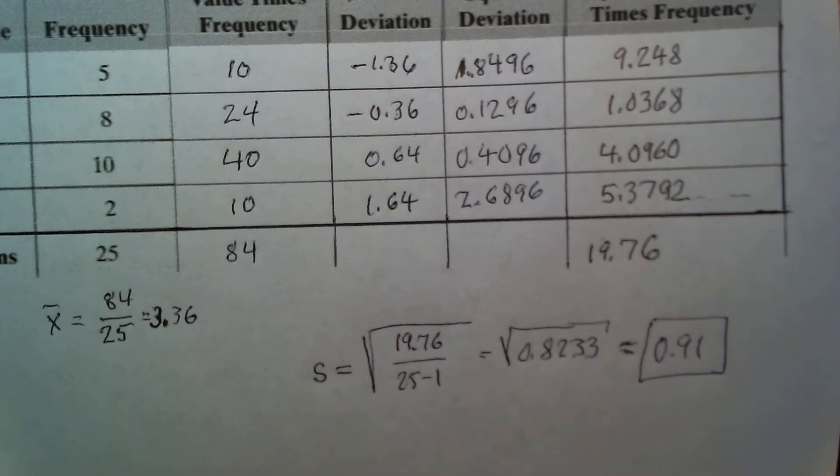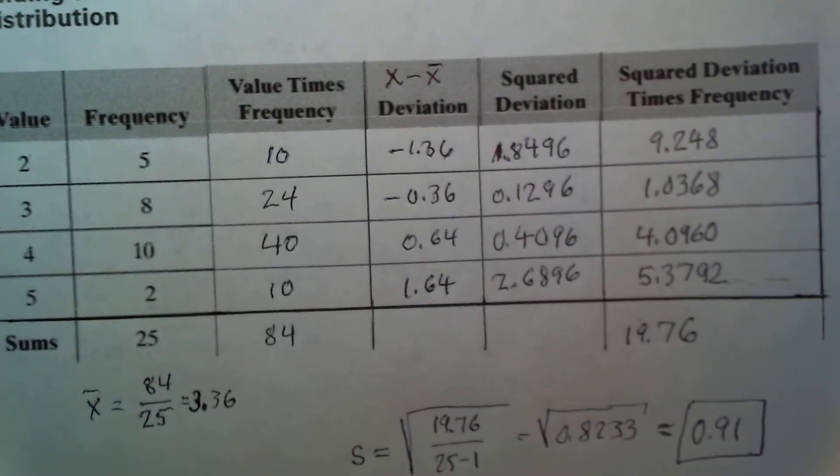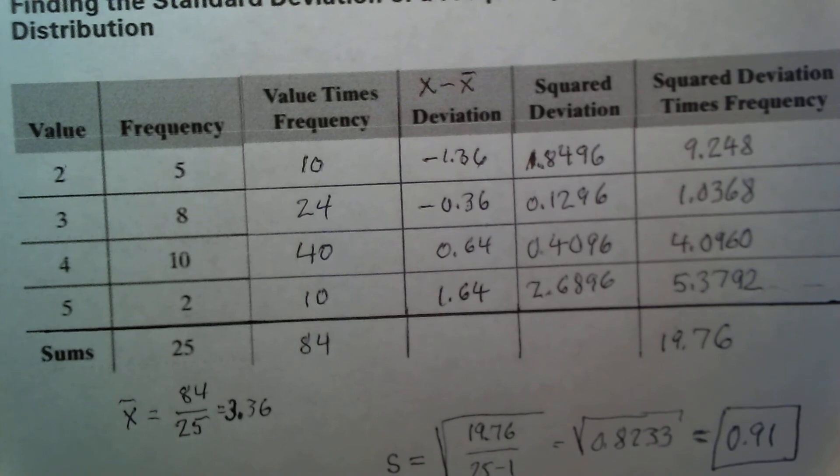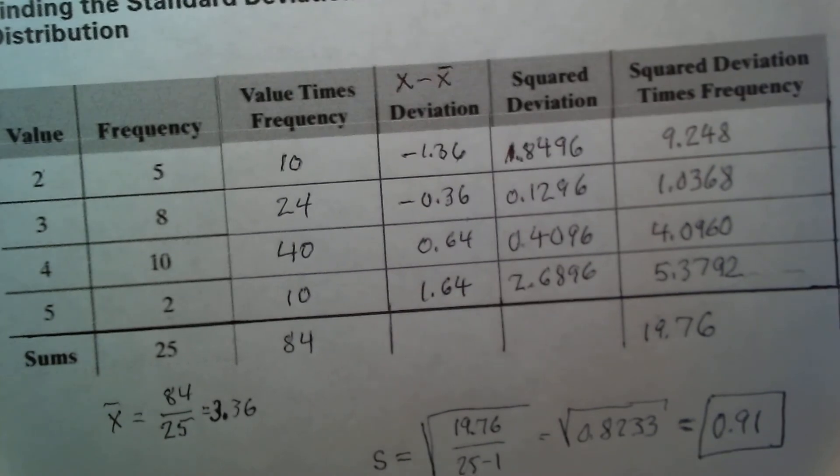That's how we compute the standard deviation of a frequency distribution step by step — a good model to follow if you do it manually. I would recommend studying example number five in the book on page 700, which is about comparing populations based on samples using standard deviation and mean to draw conclusions. It's an excellent example, so be sure to study it.